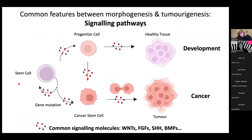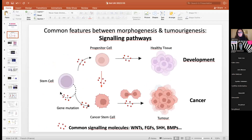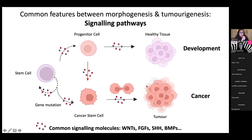It all starts with one cell which, depending on the cues it receives, will either have changes in gene expression and go on to differentiate and proliferate to give rise to a healthy tissue, or it can give rise to a cancer stem cell which will then divide and give rise to a tumor. These two processes can be driven by the same signaling molecules, such as Wnts and FGFs.